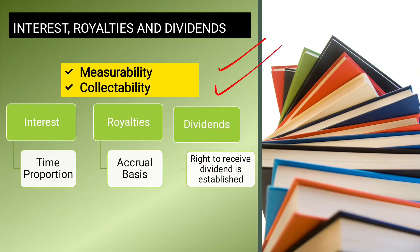For both rendering of service methods, two conditions must also be met: measurability and collectability. If there is uncertainty in measurability or collectability, revenue recognition should be postponed.